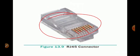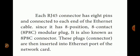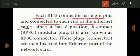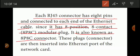The RJ45 connector is a small plastic cup. Each RJ45 connector has 8 pins connected to each end of the Ethernet cable — 8 positions and 8 contacts. It is also known as an 8P8C connector, where 8P stands for 8 positions and C stands for contact.